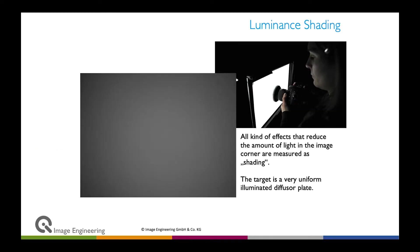We differentiate different categories of shading. One is luminance shading, also very often called relative illumination or vignetting. This describes basically the fall-off from the center to the corner, so that you have darker corners than you have in the center.